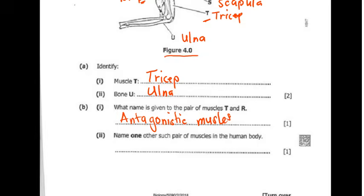Question 4B2: name one other such pair of muscles in the human body. We have the radial muscles and the circular muscles — these are found in the eye. Either radial muscles or circular muscles will give you your one mark.